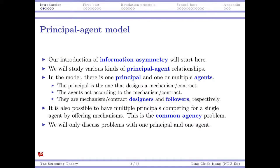One remark: sometimes we may have multiple principals competing for a single agent. For example, if there is a very strong retailer willing to sell products from only one manufacturer, then multiple manufacturers may need to compete for that agent's collaboration. This is called the common agency problem, and it is very complicated, so we will not cover it in this course. We will only focus on problems with one principal and one agent.